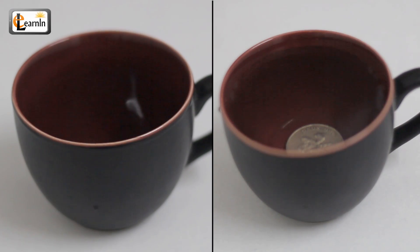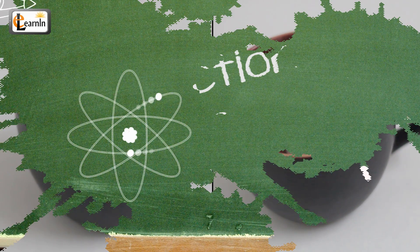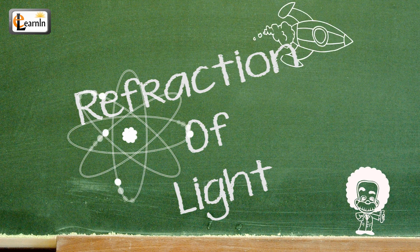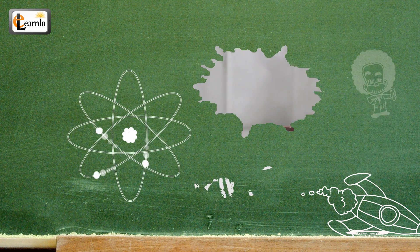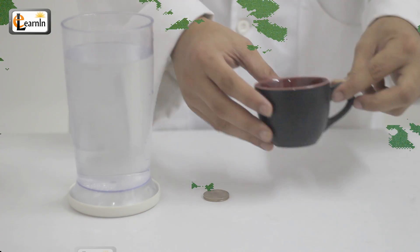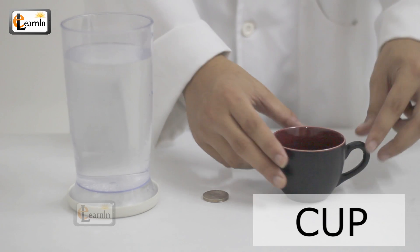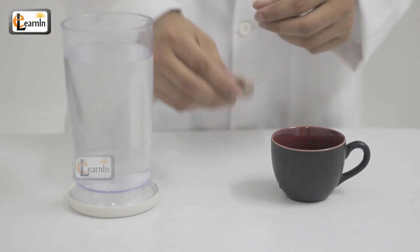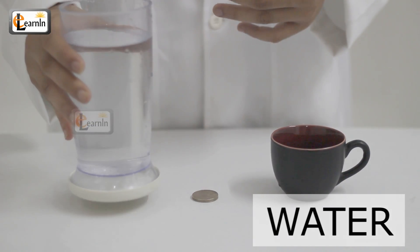Today we're going to do an experiment that demonstrates the bending of light, which is called refraction of light. For this experiment, you're going to need a cup, a coin, and some water.